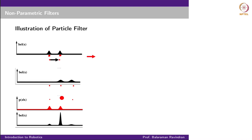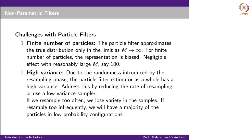Particle filters are great, but there are challenges. First, we use a finite number of particles. When M tends to infinity, the particle filter approximates the true distribution, but for a finite number of particles, the representation is biased. For more complex distributions, there may not be enough particles to represent the whole region. In practice, for most robotics applications, as long as M is reasonably large — even a few hundred — this bias effect is negligible except in very rare cases.